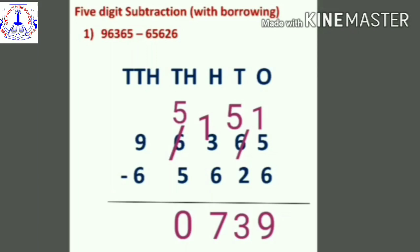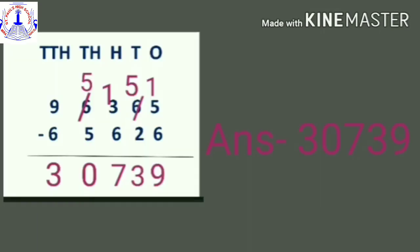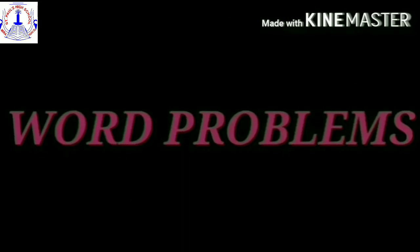In the thousands place: five minus five is zero. Then the last digit, the ten-thousands place: nine minus six is three. So the answer is thirty thousand seven hundred and thirty-nine.